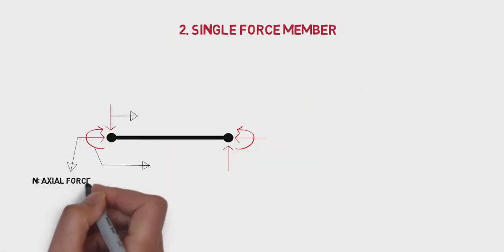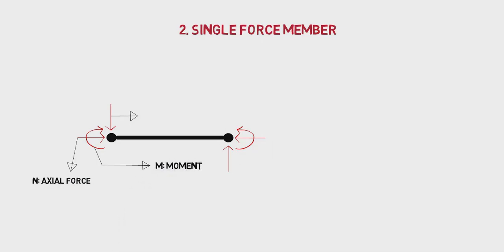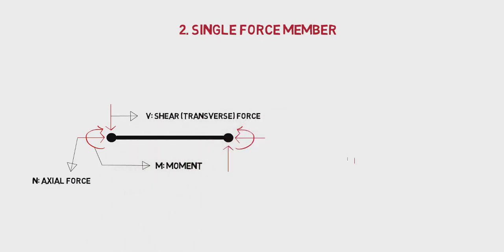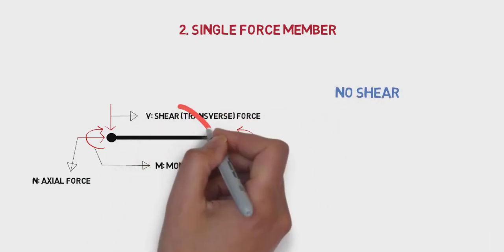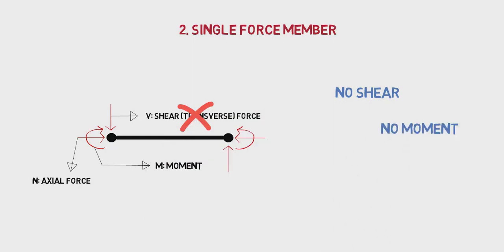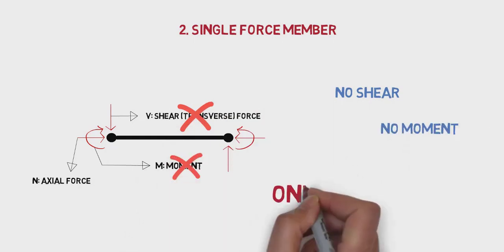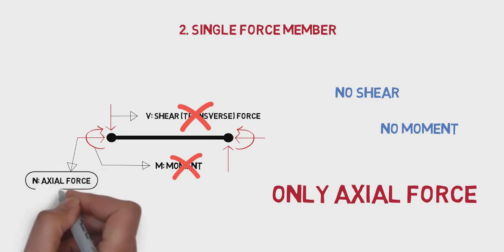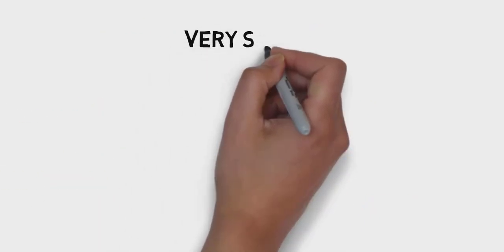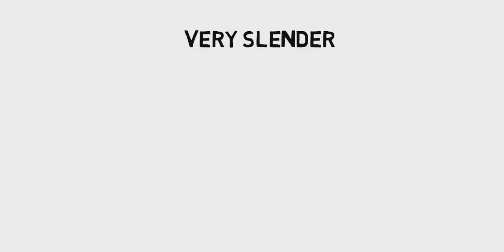The second assumption is single force members. Here we assume that there is no transverse load, which is shear, or there is no moment. Remember this: trusses only have force in its axial direction.